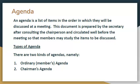Now let's look at the agenda. An agenda is a list of items in the order in which they will be discussed at a meeting. This document is prepared by the secretary after consulting the chairperson and circulated well before the meeting so that members may study the items to be discussed. There are two types of agenda: the ordinary or members' agenda, which we attach with the notice, and the chairman's agenda, which only the chairman will utilize.